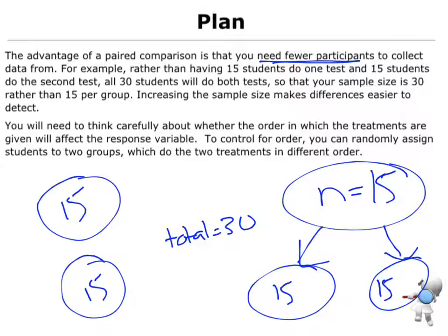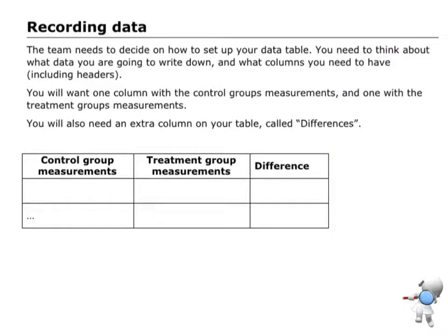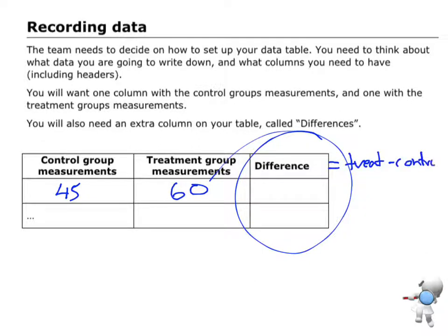I also need to think carefully about the order in which the treatments are given, which is our random allocation. In terms of recording data, we're going to have our control and treatment groups, and again, we're going to be looking for that difference. So, if I was testing a student's test mark, I'd say the first test, they got 45, and the second test, they got 60. That means the difference, I'm going to do the second one, treatment, take away the control. So, in that case, it would be 60, take away the 45, that would give me a difference of 15. So, that means they got 15 marks more in the second one than they did in the first test.